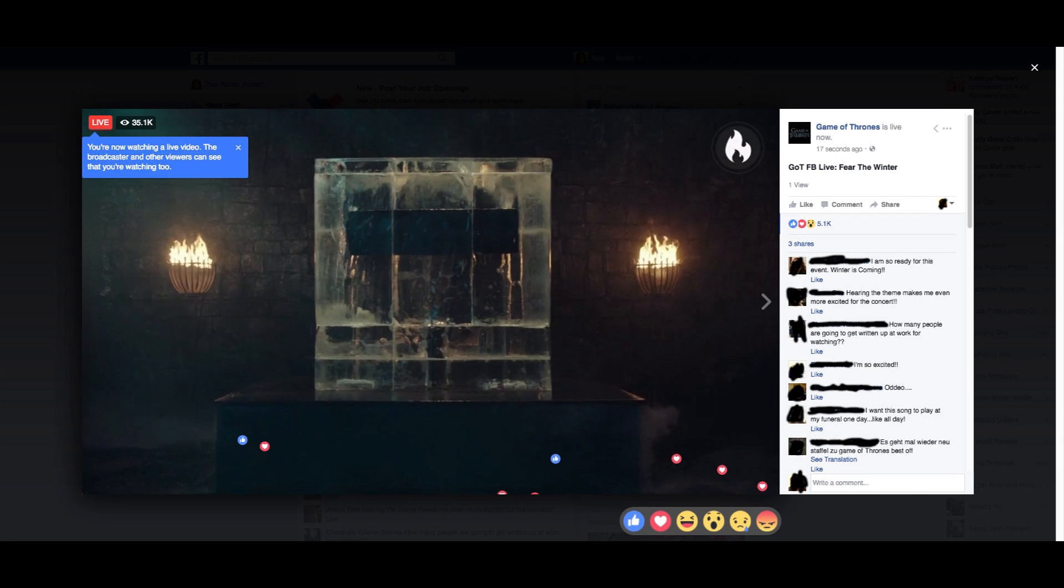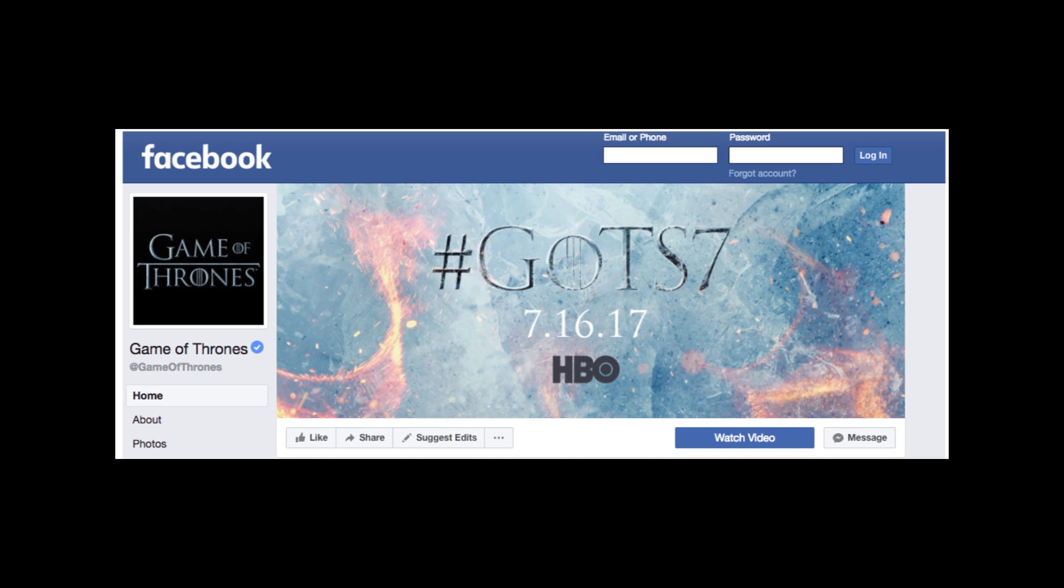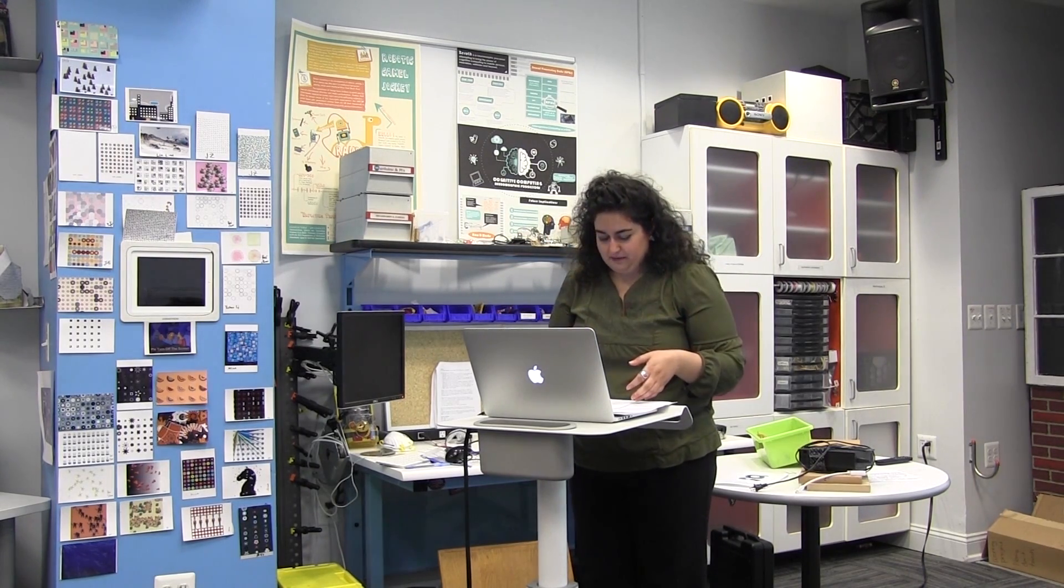Game of Thrones used Facebook Live to release the date of their season seven premiere. And now it's the cover photo. So if you wanted to know when the next season is, you didn't have to check through HBO or through Entertainment Weekly. You can go directly to the HBO Game of Thrones Facebook page and know right then and there. It's July 16th. So how does that affect the relationships? Well, now they have direct access to the fans and fans have direct access to them.